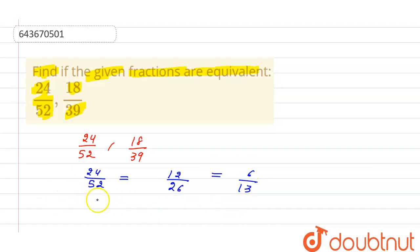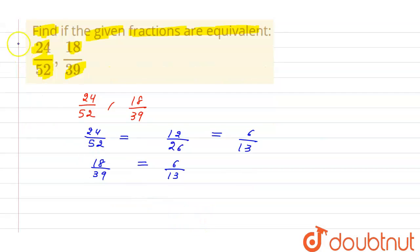So this will be 6 divided by 13. Next we have 18 divided by 39 so we can cancel it with the table of 3: 3 into 6, 3 into 13. So yes they are equal, yes.